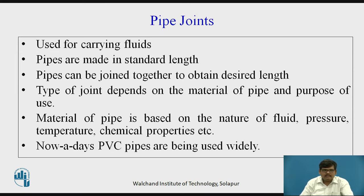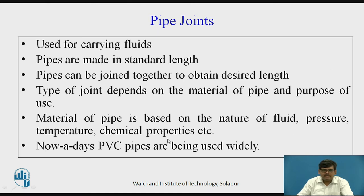Depending upon the purpose, we select the type of joint. The material of pipe is based on the nature of the fluid that flows through the pipe — whether it is in gaseous or liquid form — then the pressure of that fluid, whether it is supplied at very high pressure or at low or moderate pressure. Depending upon that, the material of the pipe is chosen. The temperature of the fluid — whether hot or cold — also determines material selection.